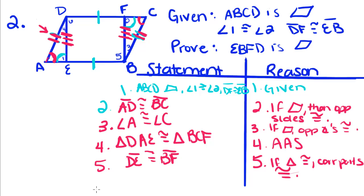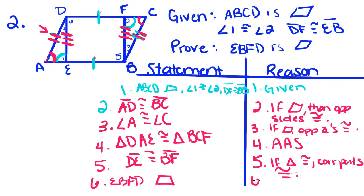Finally, since we know that one pair of opposite sides are congruent — we were told that — and we just proved the other pair congruent, we can say that EBFD is a parallelogram. If two pairs of opposite sides are congruent, then it is a parallelogram.